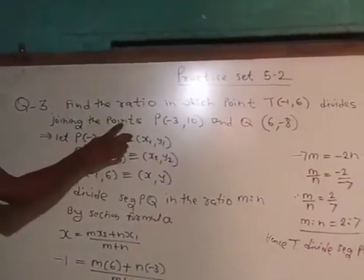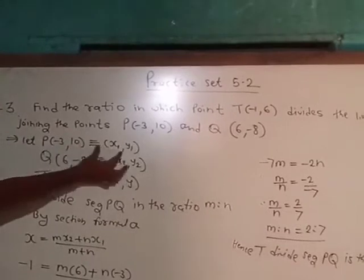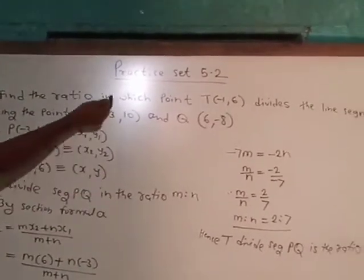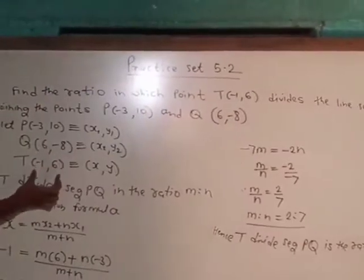We need to find the ratio m:n. Let P have coordinates (x1, y1), Q have coordinates (x2, y2),